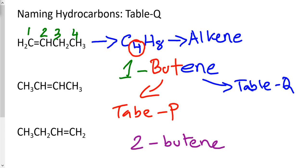For this compound, even though the double bond is between the first and second carbon, we cannot name it 2-butene. We are not allowed to name it 2-butene because we always have to pick the lowest possible number to represent the location of an unsaturated double or triple bond. So remember: always pick the lowest possible number.